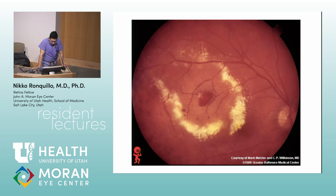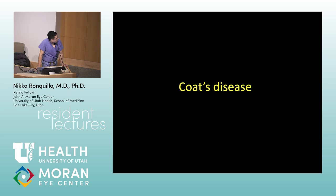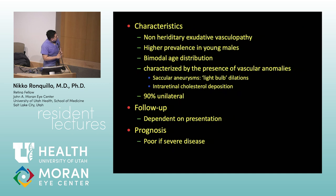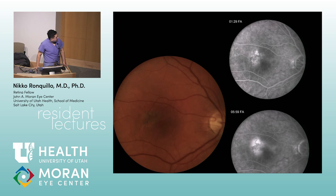Next — this looks like RAM but has a lot of exudation. This is Coats disease — one of the telangiectatic diseases. MacTel is another telangiectatic disease. Coats is a male, unilateral disease with no known genetic mutation — it's spontaneous. It has a bimodal age distribution. It can cause serious exudative detachment.